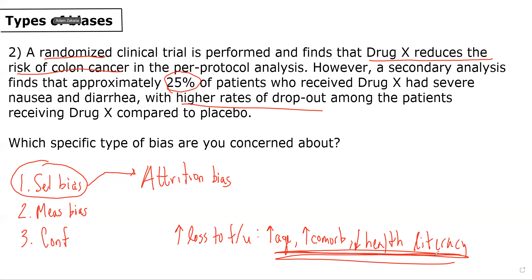So again, this question really emphasizes that selection bias can both occur on the front end and the back end. And when it occurs on the back end due to losses to follow-up, always consider attrition bias as a potential culprit.